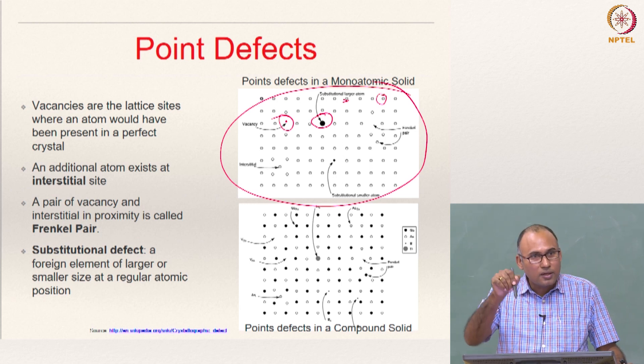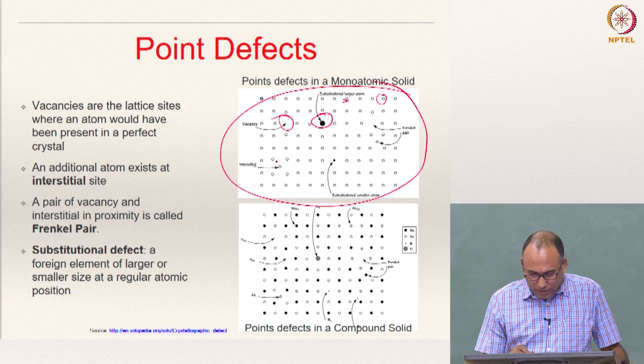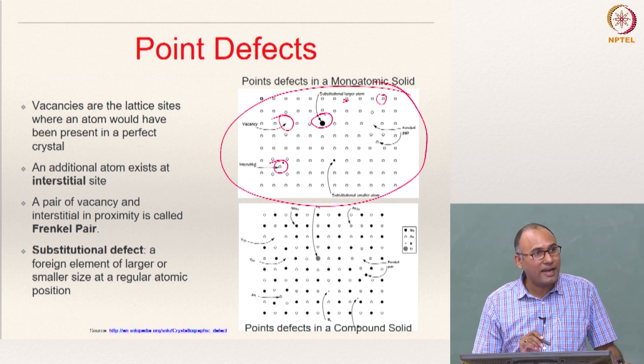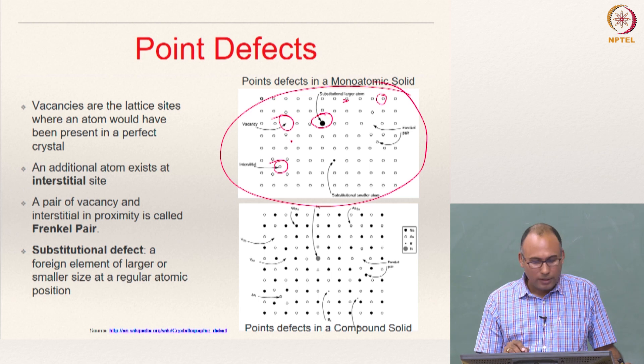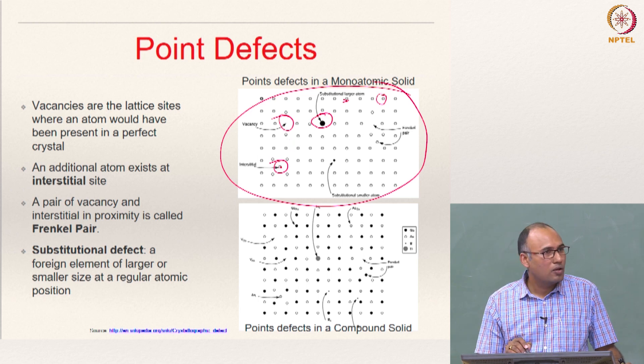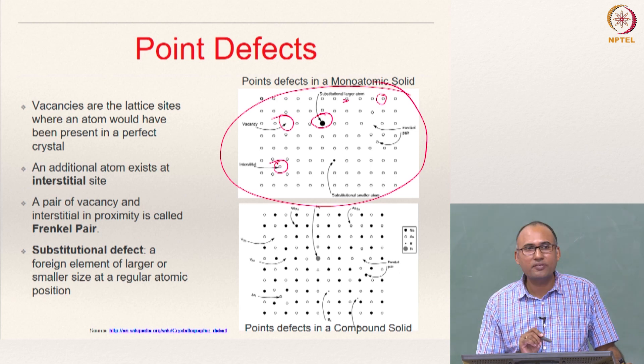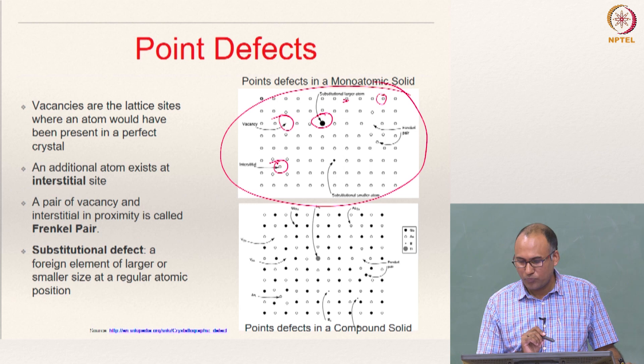It is actually substituting for the position and here if you see, this is actually not a lattice site, but this atom actually comes and sits in the interstitial positions available amongst the lattice sites and hence such a defect is called interstitial point defect.